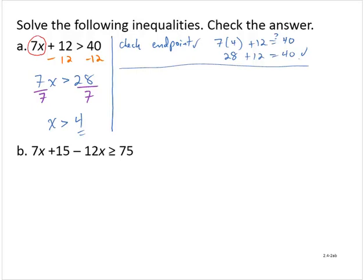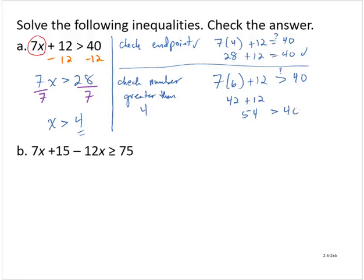And then we check a number. In this case, since it's a greater than inequality, we'll check a number greater than 4. We want to confirm that some number greater than 4 is actually a solution of the original inequality. I'll pick 6. Is 7 times 6 plus 12 greater than 40? Well, 7 times 6 is 42, and 42 plus 12 is 54, which is greater than 40. That checks out, so we can be confident in our solution.